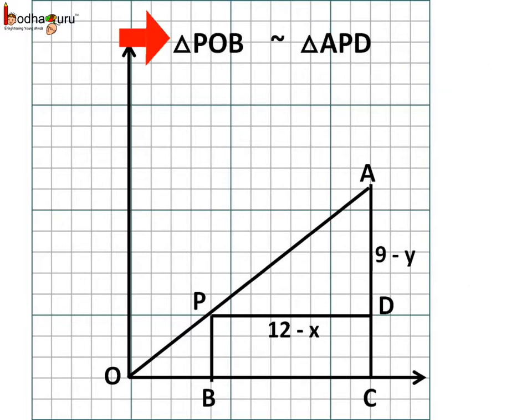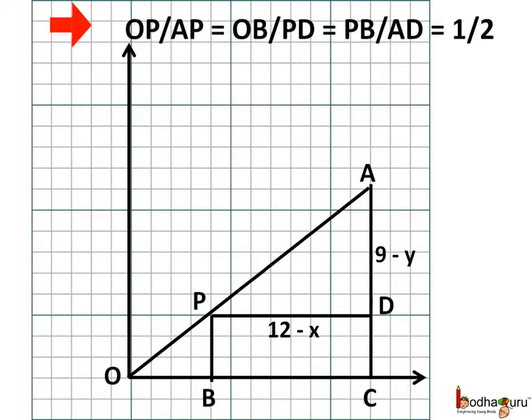Now triangle POB and triangle APD are similar triangles. So the ratio of corresponding sides will be equal. So OP by AP is equal to OB by PD is equal to PB by AD and that is equal to 1 by 2.